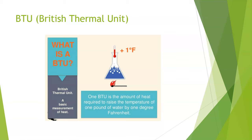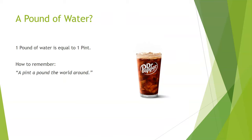One thing that gets us folks here in the United States a little confused is that 1 BTU is the amount of heat required to raise the temperature of 1 pound of water — but we don't measure water in pounds, we measure it in volume. A pound of water is equal to 1 pint. Here we have a nice pint of Dr. Pepper — that's about 1 pound of fluid. The way I remember this: a pint's a pound the world around. A little cheesy, but it works.